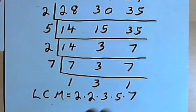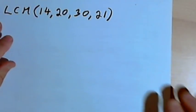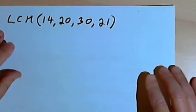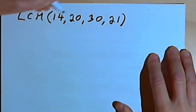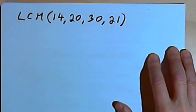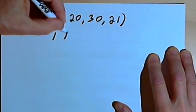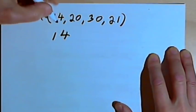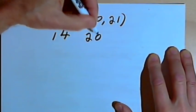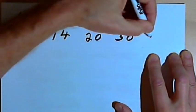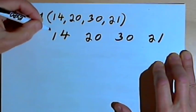Instead of computing that final product, I want to do another problem — this time finding the least common multiple of 4 numbers. Remember, you can do this for any number of numbers; you could do it for 2, or as many as you want. So I've got the least common multiple of 14, 20, 30, and 21. I'll write those four numbers left to right and put the box around them.